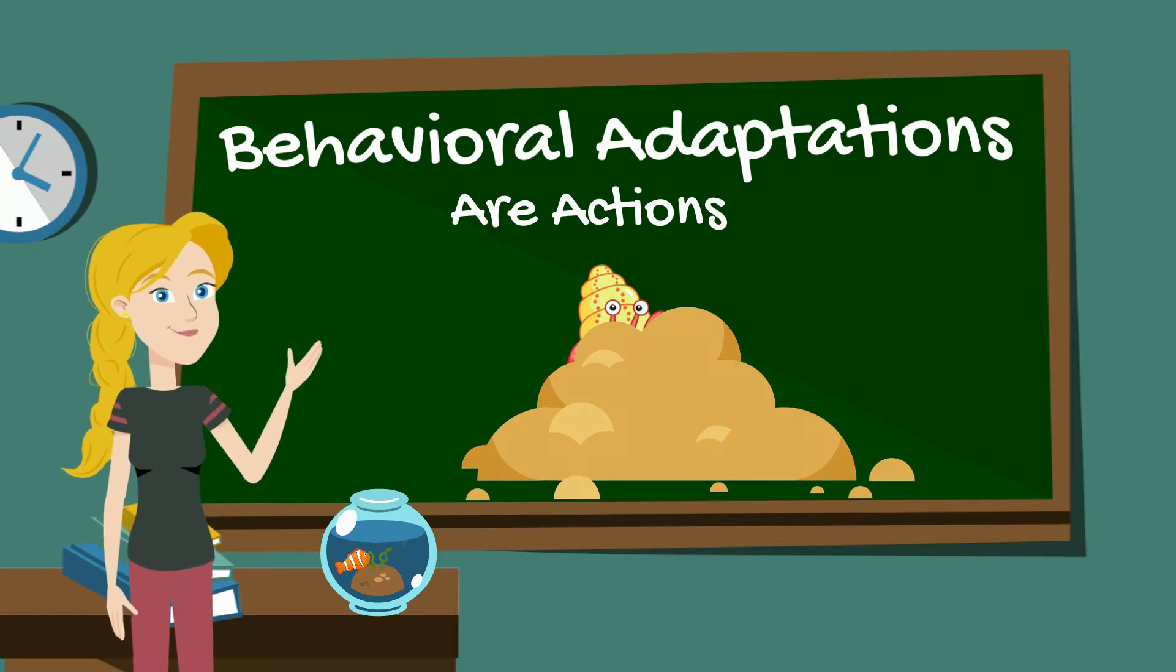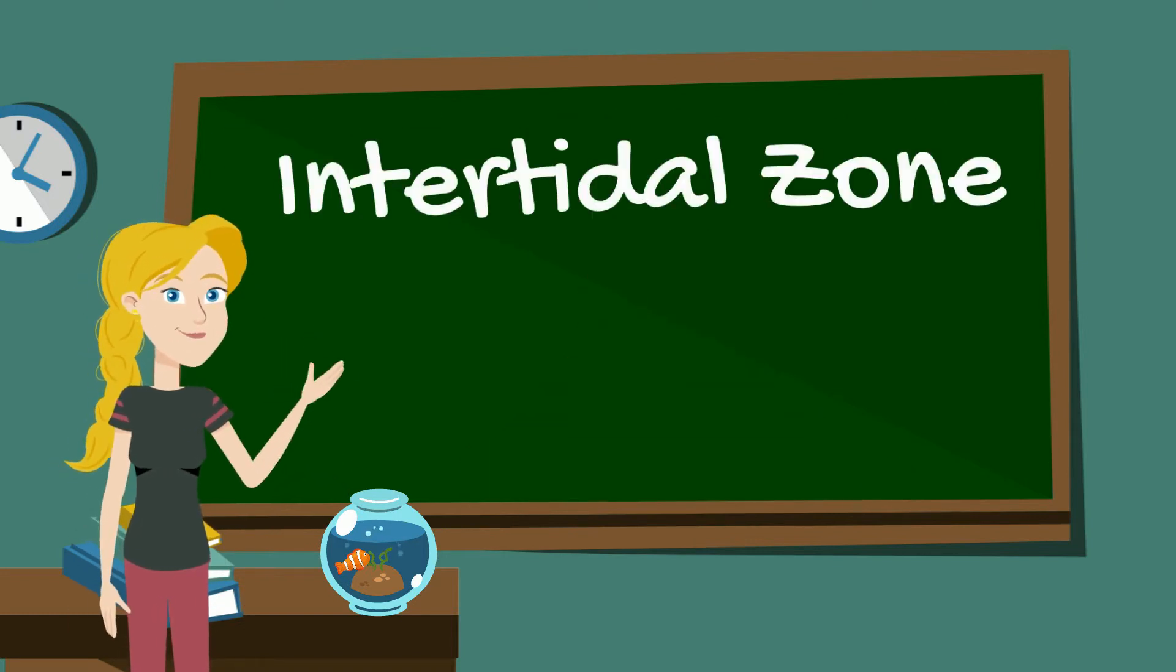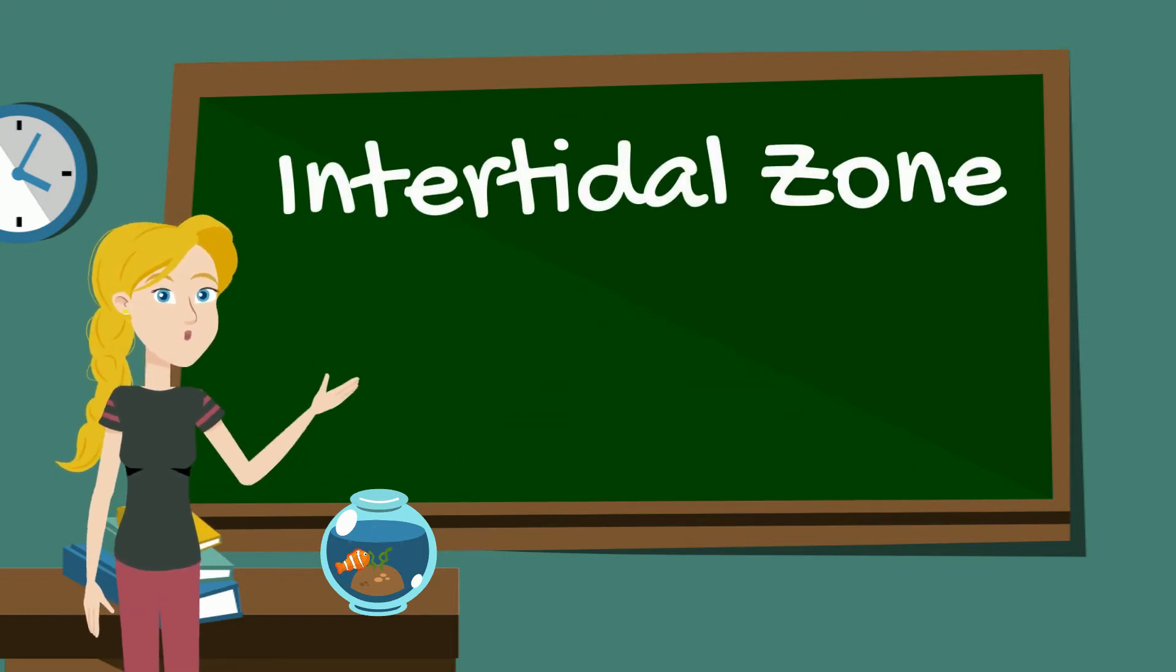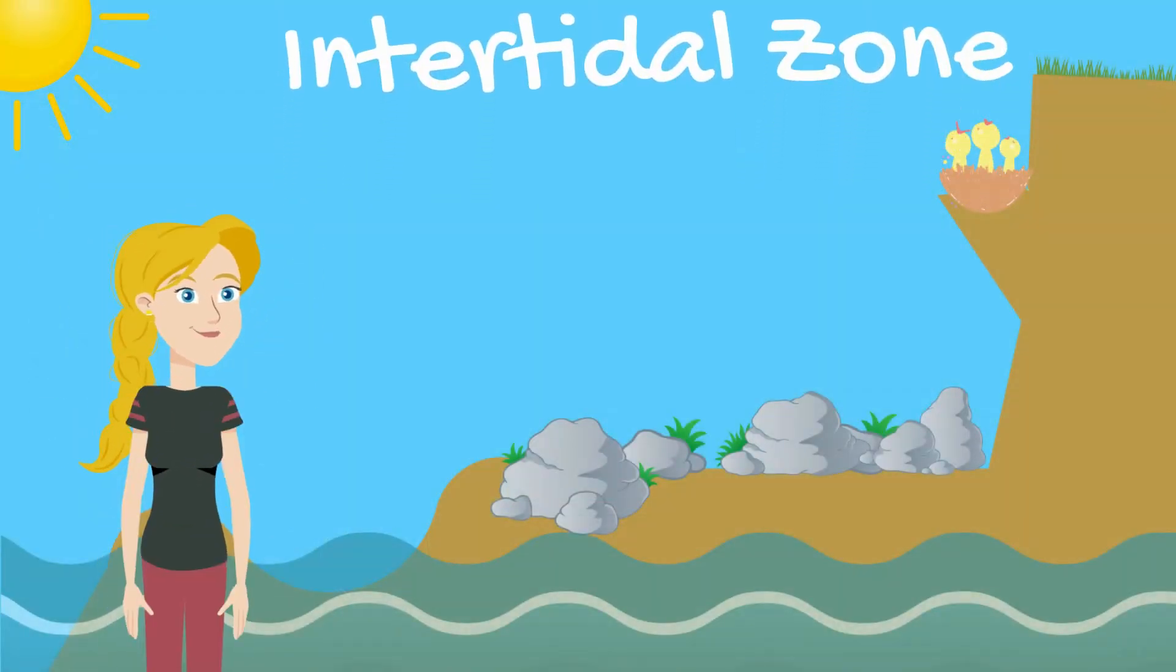As we talk about adaptations, we are also going to take a look at the intertidal zone. Intertidal zones are the place on the edge of the coast that changes depending on the rise and fall of the tide.